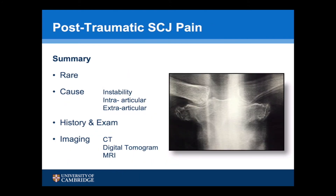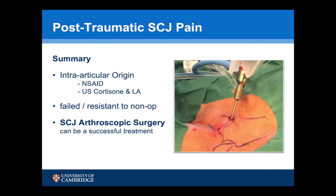In summary, post-traumatic SCJ pain is rare. Its causes may be due to instability, an intra-articular origin, or an extra-articular origin. It's best diagnosed by taking a thorough history and examination, followed by imaging including a CT scan and digital tomogram, with an MRI scan if instability or disc tear are considered. The first line of treatment for intra-articular pain is anti-inflammatory tablets, and if this doesn't work, an ultrasound-guided cortisone injection or local anaesthetic. Where symptoms are resistant to non-operative measures, sternoclavicular joint arthroscopic surgery can be a successful treatment.